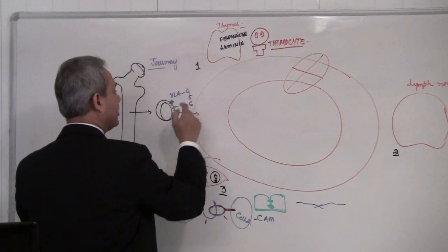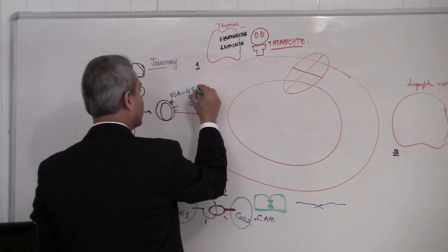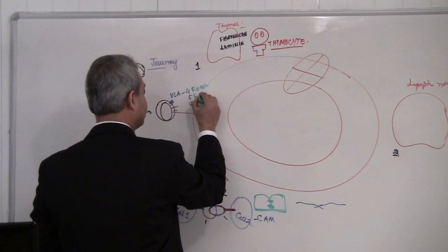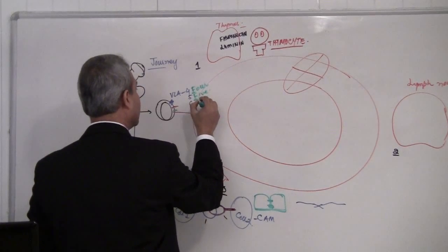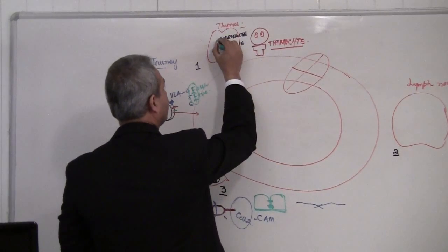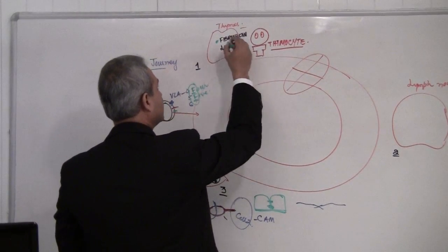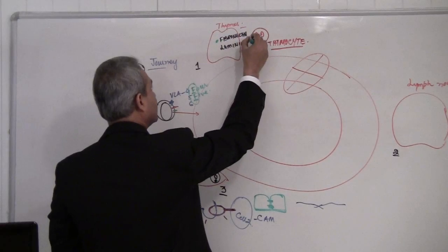Now VLA 4 and 5, remember both 4 FOUR, 5 FIVE, they both express, they both have the F in the beginning. Here fibronectin also has F in the beginning. So, what happens is that VLA 5...